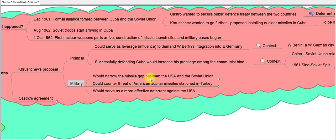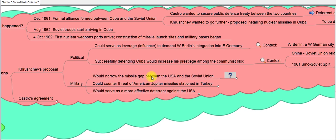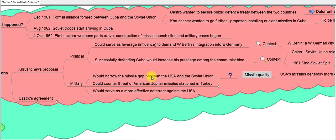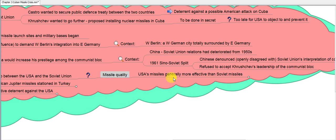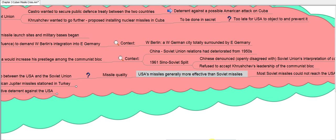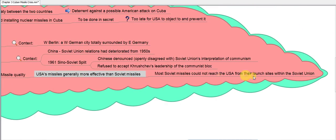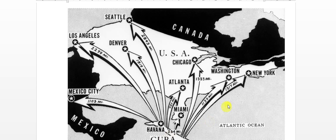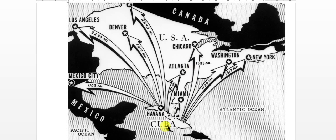Militarily, placing missiles in Cuba would narrow the missile gap between the USA and the Soviet Union. American missiles were generally more effective, and most Soviet missiles could not reach the USA from launch sites within the Soviet Union. With missiles in Cuba, that would change — Soviet missiles placed in Cuba would be able to reach many different parts of the US, giving the USSR a significant strategic advantage.